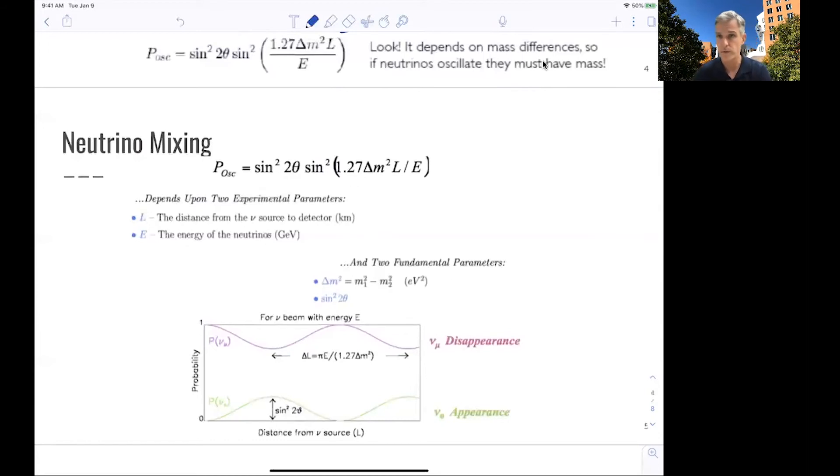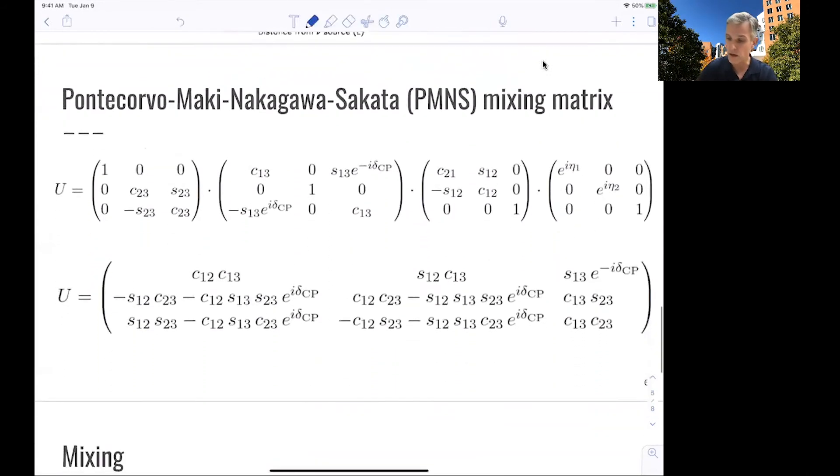All right. So we find later that we want to look for disappearance and appearance of neutrinos of specific flavors in order to probe mass differences. Instead of doing this for two generations, we already know how to do this in three generations. We find that the unitary matrix has three angles, three rotations, and one complex phase. And this looks very much the same as in the quark sector.